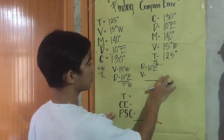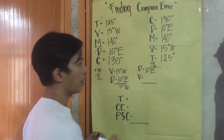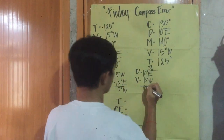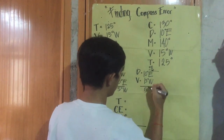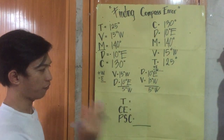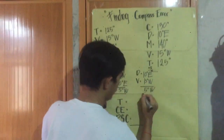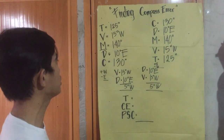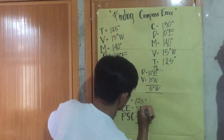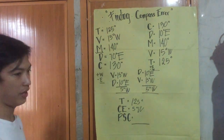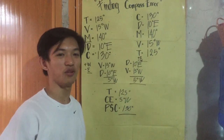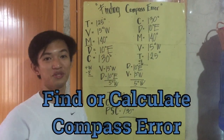The deviation is 10 degrees east and the variation is 15 degrees west. We subtract them because they are not alike, giving us 5 degrees west — that is our compass error. So if we have a true course of 125 degrees and a compass error of 5 degrees west, we'll have a ship's compass of 130 degrees. Thank you for watching — that's how you find or calculate compass error.